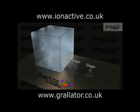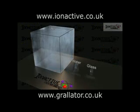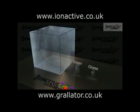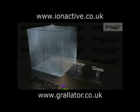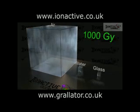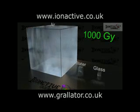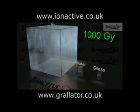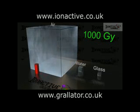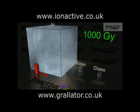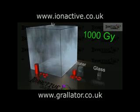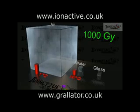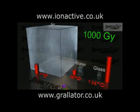The effect of absorbing the energy is also different for the different materials. Consider the effect on the temperature of each of our 1 kg cubes of air, water, and glass receiving an absorbed dose of 1000 Gy. This amount of energy is enough to raise the temperature of the cube of air by 1 degree Celsius. For water, the effect is much less, and a temperature rise of only a quarter of a degree Celsius would be seen, while for glass, the temperature rise would be larger than for both air and water, at 1 and a quarter degrees Celsius.